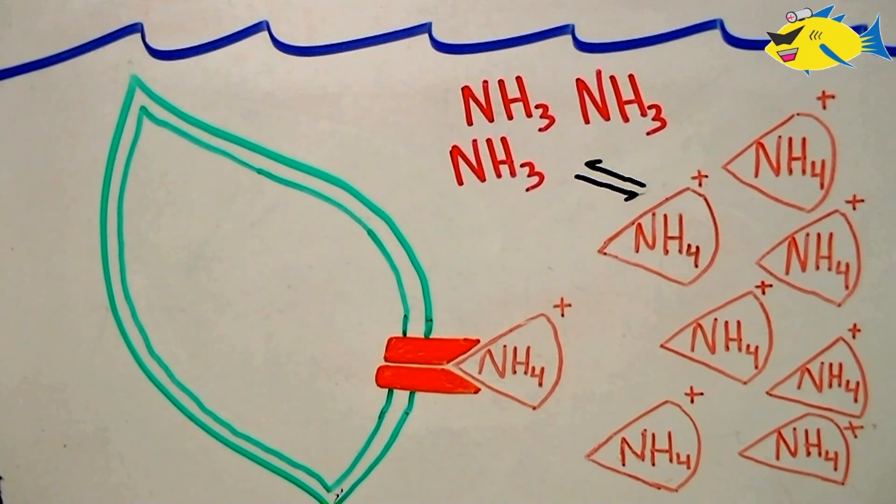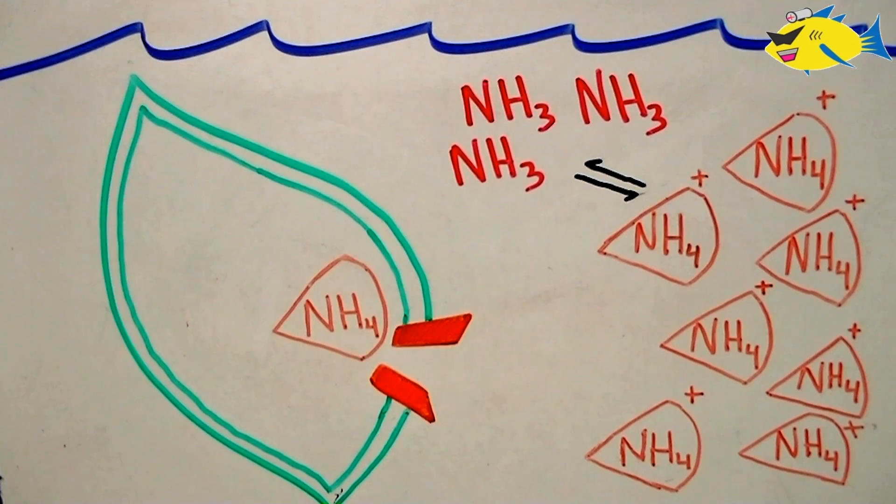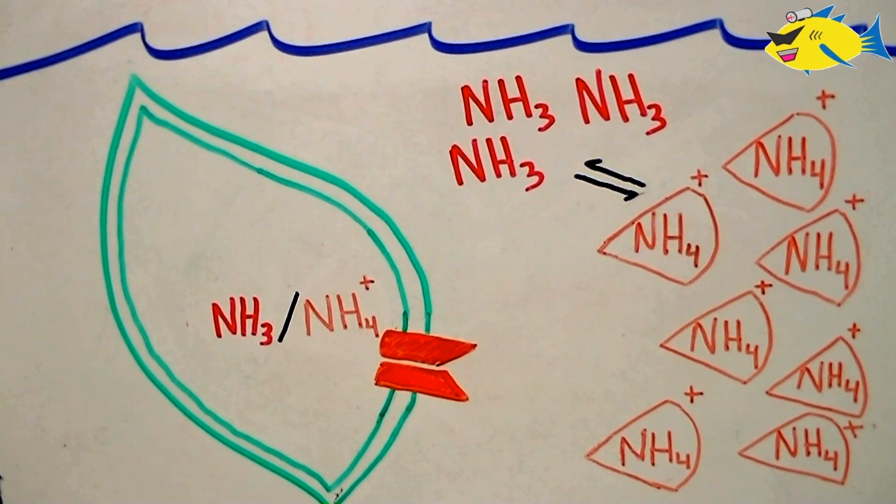When ammonium binds to its specific receptor, it's allowed entrance into the cell. Once inside, there's no need to expel any energy because ammonium is already in a usable form. This is why most plants prefer this compound over nitrate.